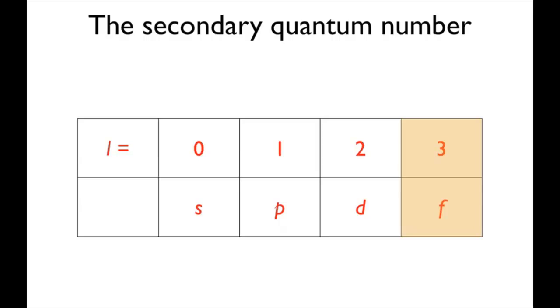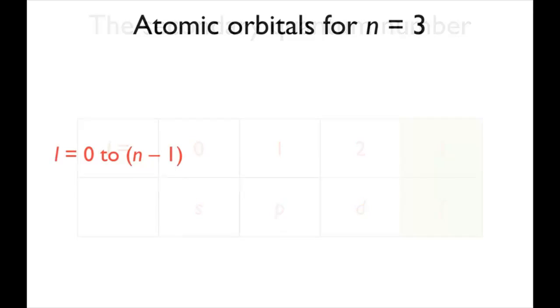What atomic orbitals are possible for a principal quantum number n of 3? The restrictions on the values of the secondary and magnetic quantum numbers help us answer this. For n equals 3, the secondary quantum number can be 0 to 3 minus 1, which means that the allowed values are 0, 1, and 2. This means that 3s, 3p, and 3d orbitals are possible, but not 3f orbitals, which require l to be 3.